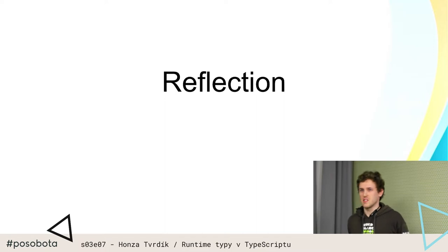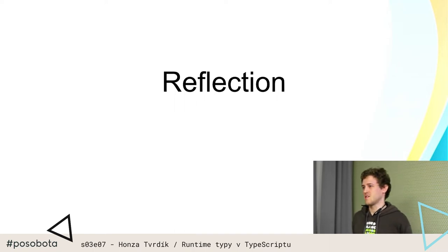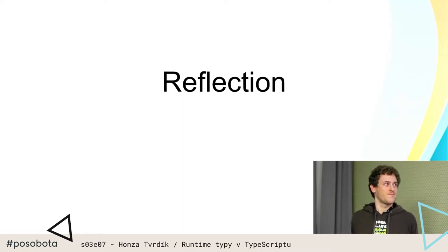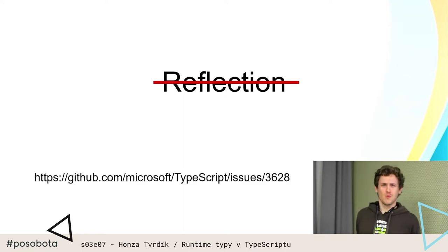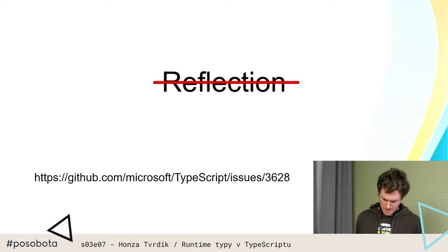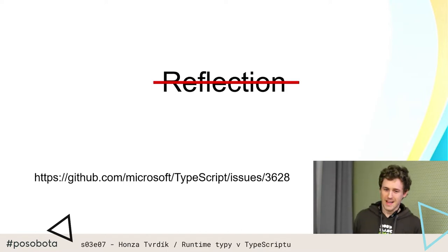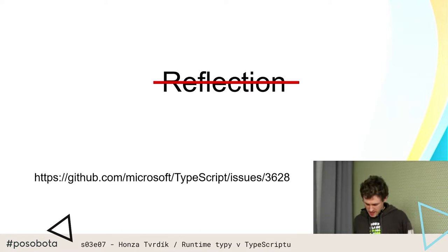Prostě kouknete se přes reflexi, jak je ten typ, posanalyzujete si ho, najdete si, jaké tam jsou properties, případně si můžete přečíst nějaké anotace nad těma fieldama, a napíšete si nějaký fancy hydrátor, který za vás tu práci udělá. Nicméně TypeScript má takovou tu featuru — a to je nemít reflexi. On prostě ty všechny typové informace smaže. Takže tradiční řešení, jak se to vlastně řeší všude jinde, nefunguje — musíme najít řešení jinde.